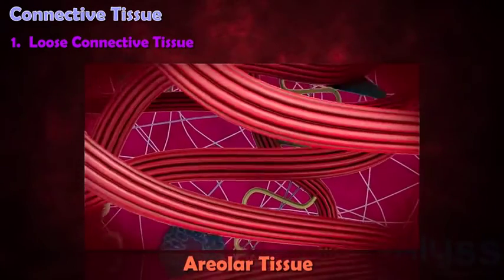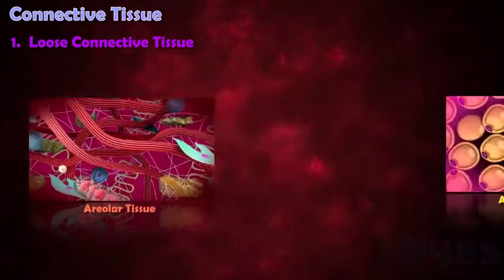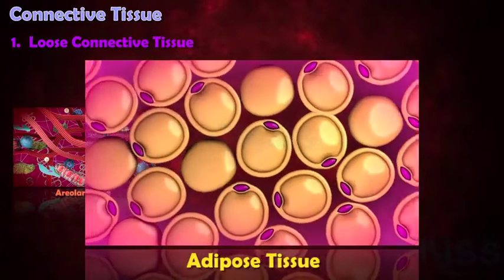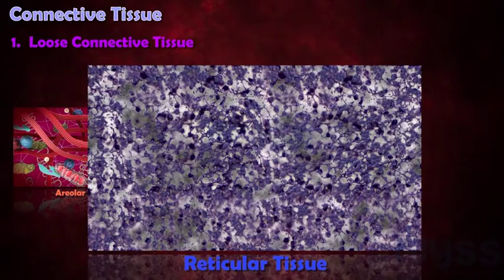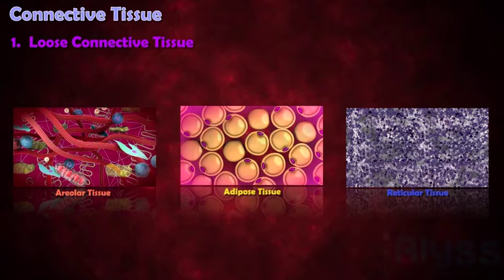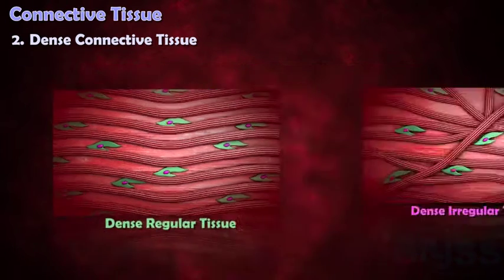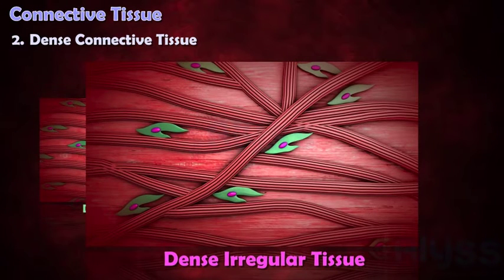Loose connective tissue includes areolar connective tissue, adipose tissue, and reticular connective tissue. Number two, dense connective tissue, which is again divided into dense regular and dense irregular connective tissue.